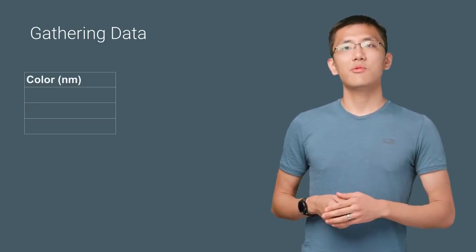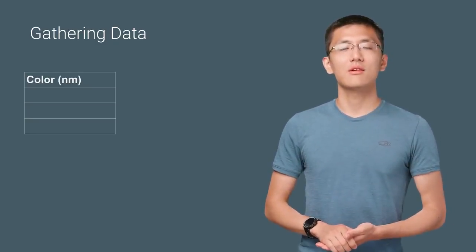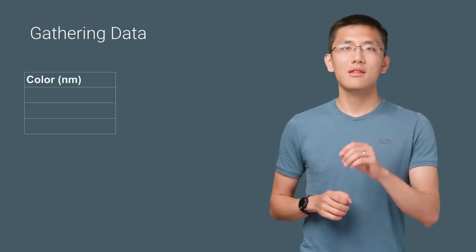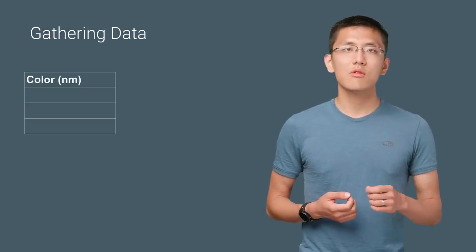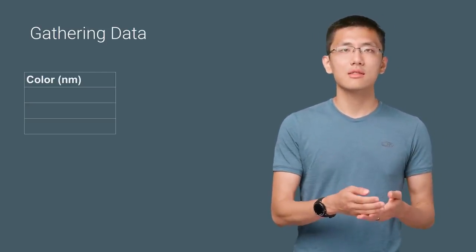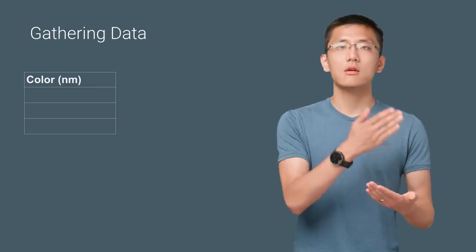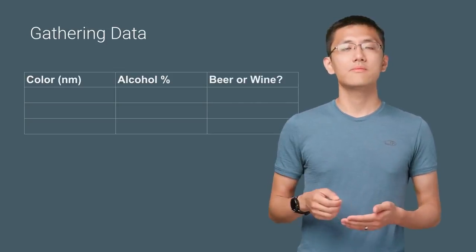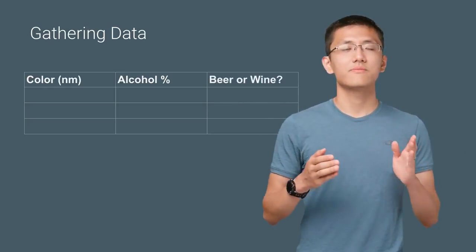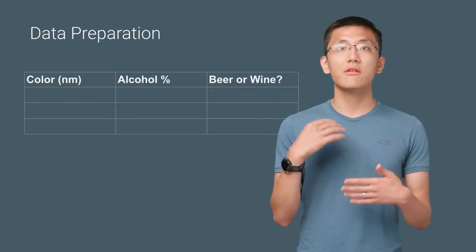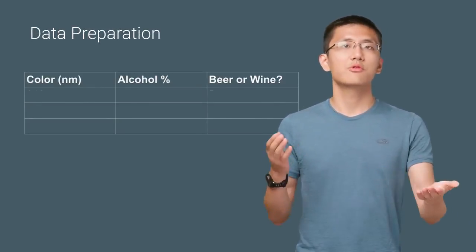This step is very important because the quality and quantity of data that you gather will directly determine how good your predictive model can be. In this case, the data we collect will be the color and alcohol content of each drink. This will yield us a table of color, alcohol content, and whether it's beer or wine. This will be our training data. So a few hours of measurements later, we've gathered our training data and had a few drinks, perhaps.